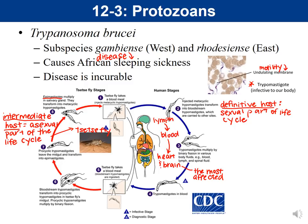What makes Trypanosoma sneaky is that it performs antigenic switching. Normally the immune system recognizes antigens — foreign molecules on the surface — and produces antibodies to attack them. The problem is that Trypanosoma is constantly changing its protein expression, changing which antigens it's displaying. By the time the body produces antibodies, Trypanosoma has changed and is expressing different antigens, and this cycle repeats, helping the organism evade the immune system.